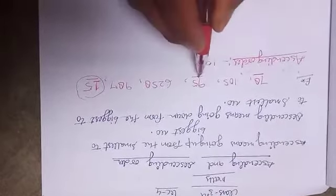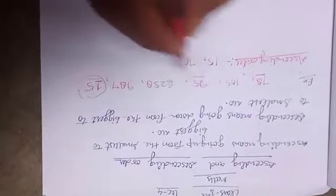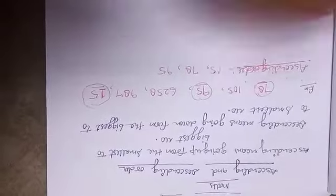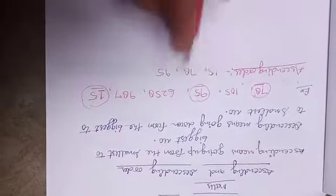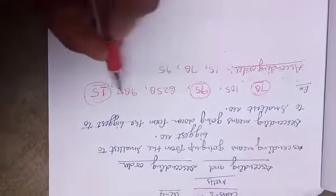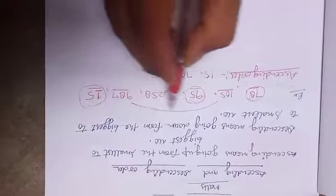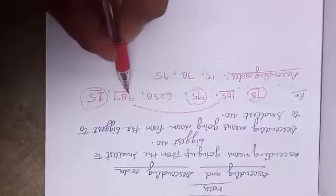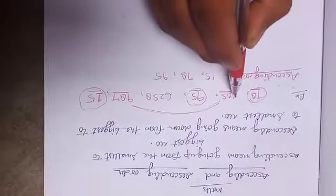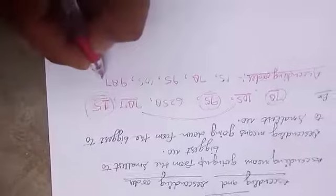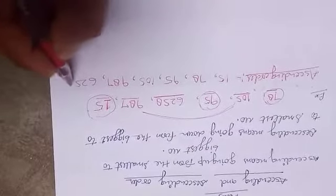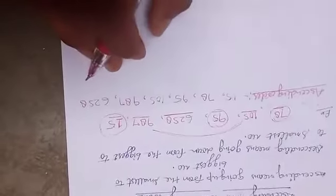After 15, here is seven and here is nine, so next comes 78, then 95. Now we have written three numbers. Next, we look at the three-digit numbers. Here is three digits and here is also three digits. We compare digit by digit — here is one and here is nine, so 105 is smaller than 987. So we write 105, then 987. The biggest number is 6258. Now we have arranged all the numbers in ascending order.